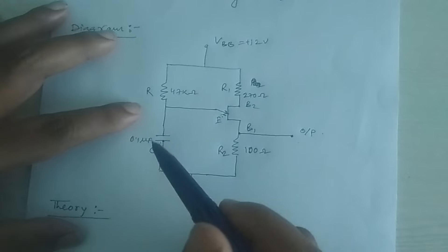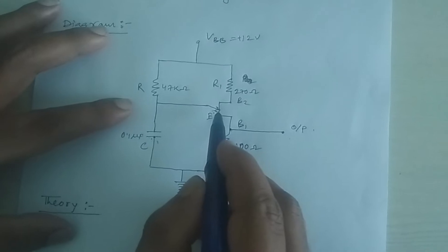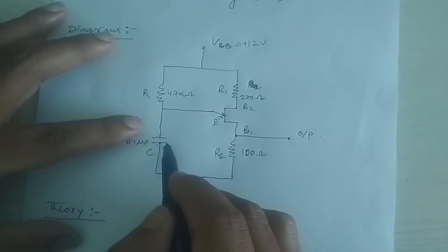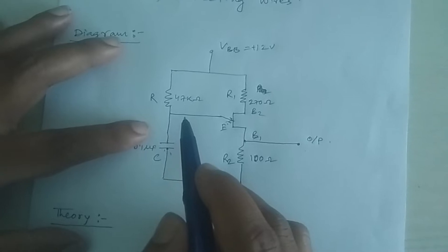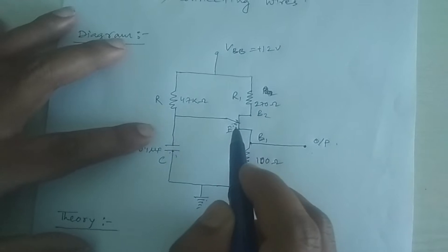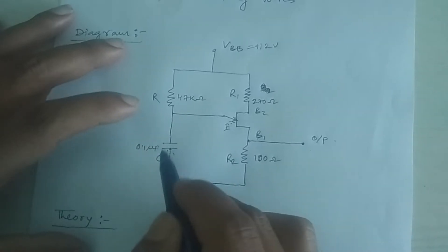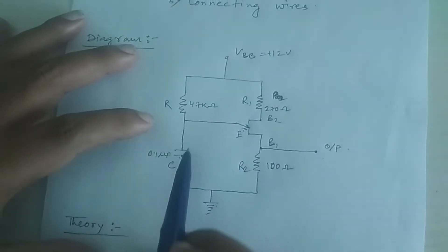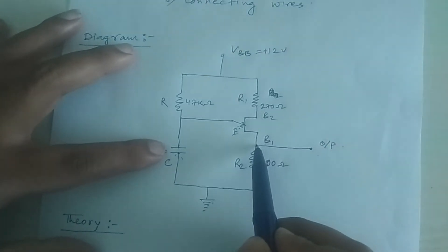Up to that point the capacitor charges continuously, then it stops charging and starts discharging. Whenever the UJT is turned on, from that point it starts discharging. It will discharge down to a minimum voltage, which is called the valley voltage, and then the UJT gets turned off. In this way the charging and discharging process continues like a cycle. We will check the output across the capacitor and the relaxation oscillator output of the UJT.